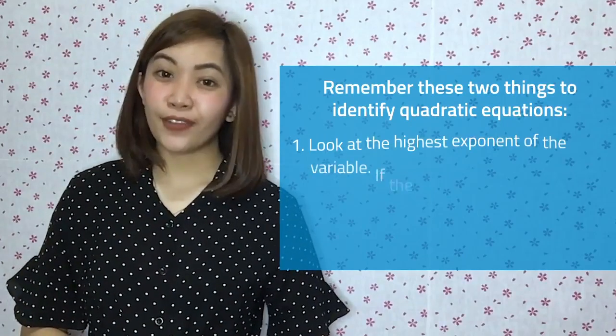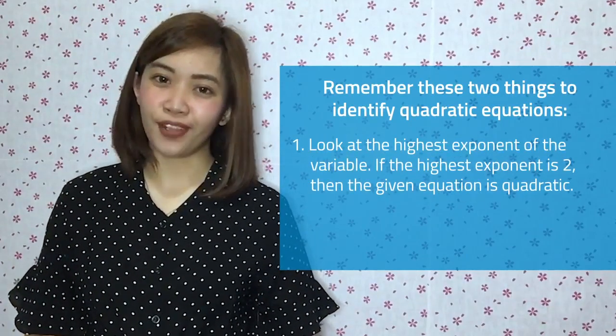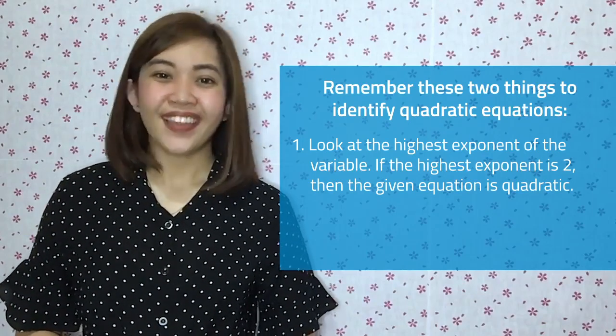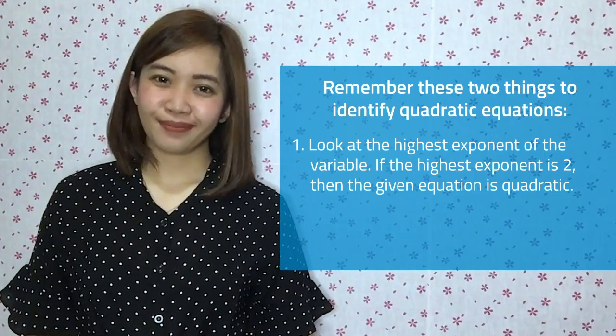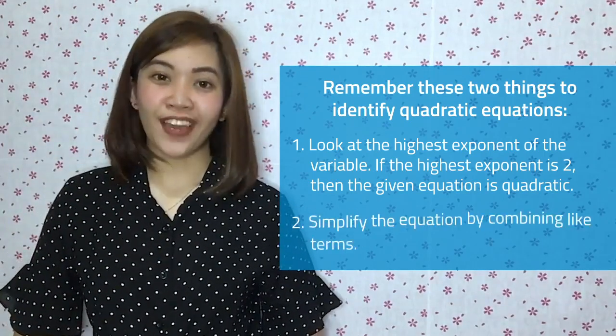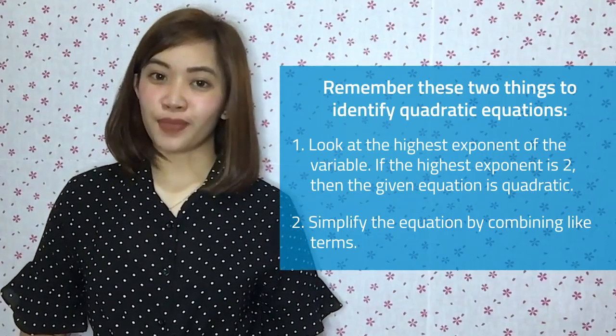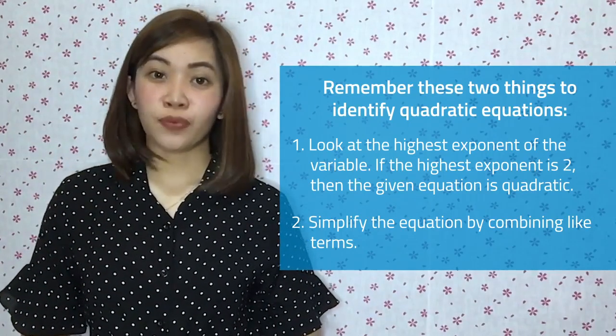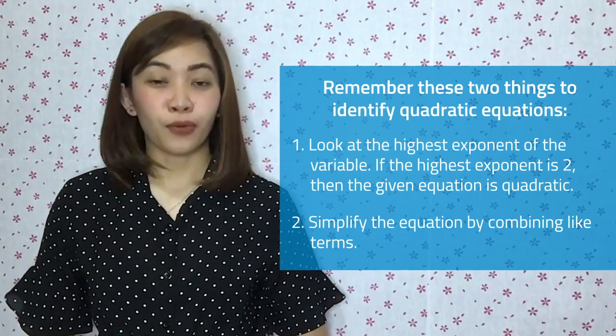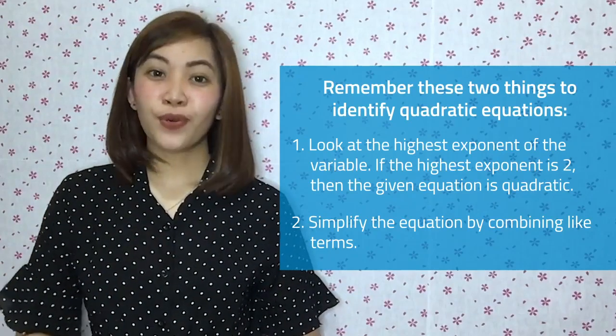Good job, students! Just keep in mind these two things to identify quadratic equations. First, if the given equation in one variable has no similar terms or grouping symbols, the easiest way is by looking at the highest exponent of the variable — if it is 2, then the equation is quadratic. Second, it is important to simplify the equation by combining like terms, as some equations with a highest exponent of 2 will have those degree-2 terms cancelled when simplified.